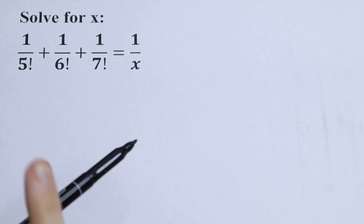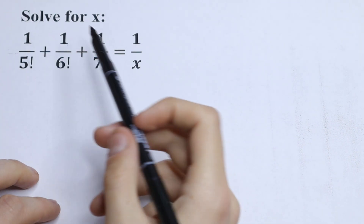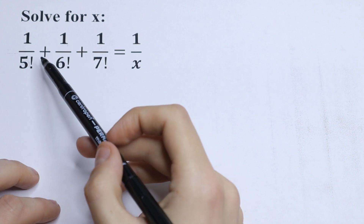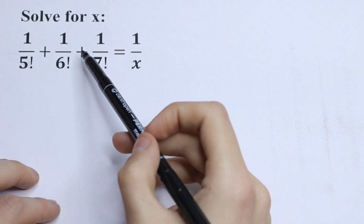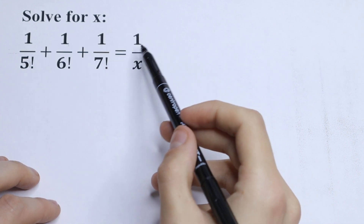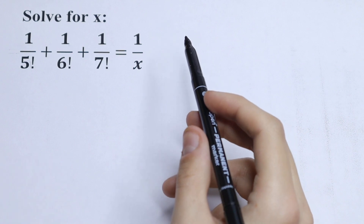Hello everyone, welcome back to MathMode. Here we have an interesting factorial equation: 1 over 5 factorial plus 1 over 6 factorial plus 1 over 7 factorial equals 1 over x. How can you solve this?